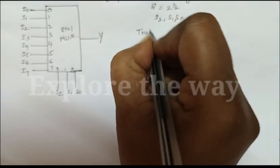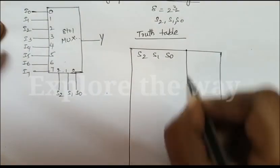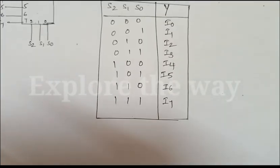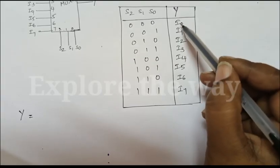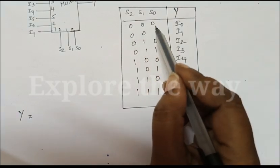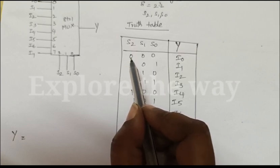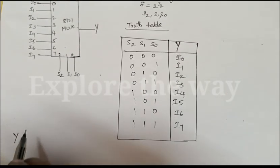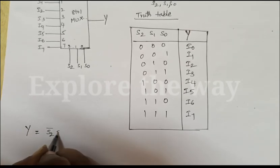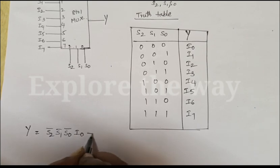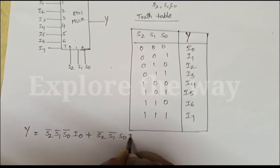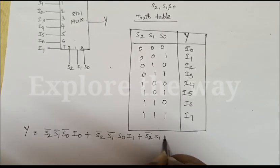Now let us write its truth table. From this, the expression for output y: the output is i0 when the inputs are 0 0 0. When a select line is 0, we express that variable in complemented form. So when it is 0 0 0, we write it as s2-bar s1-bar s0-bar i0, plus the second term s2-bar s1-bar s0 i1, plus s2-bar s1 s0-bar i2.